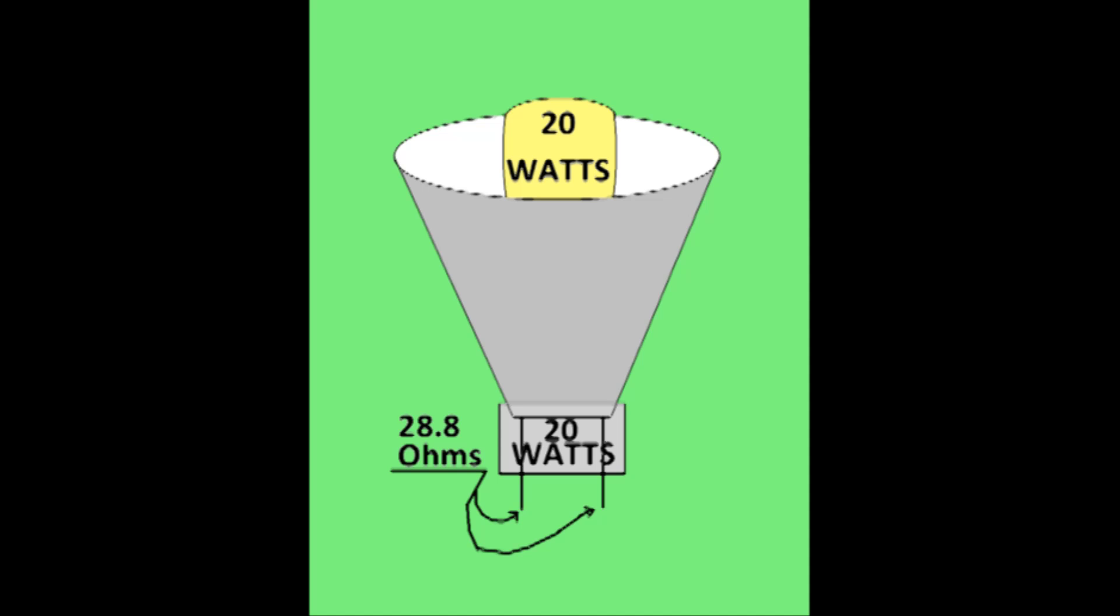When you know the wattage, in this case 20 watts, it's a simple thing to test for resistance. In this case, it's 28.8 ohms, which is typical of lower voltage systems, light bulbs included.